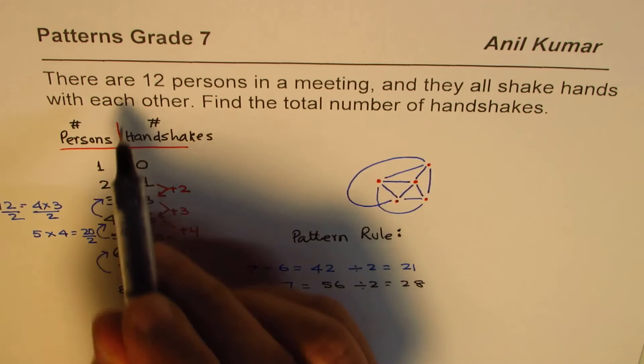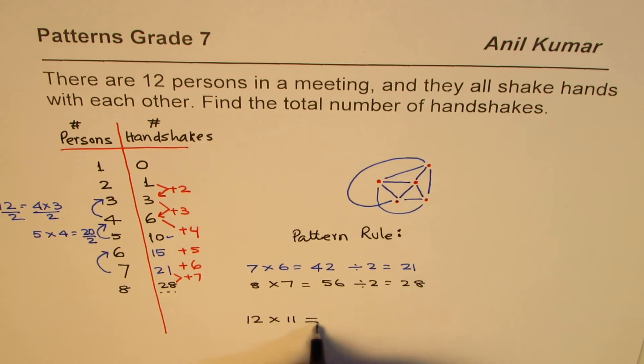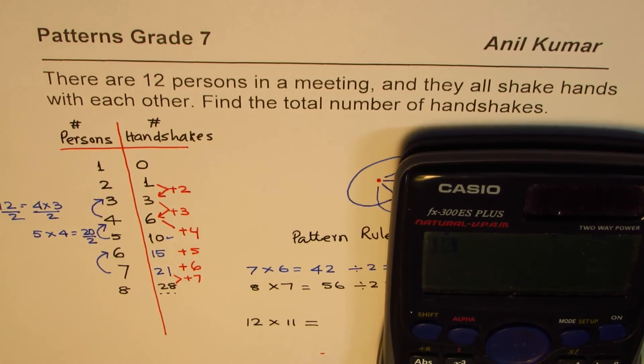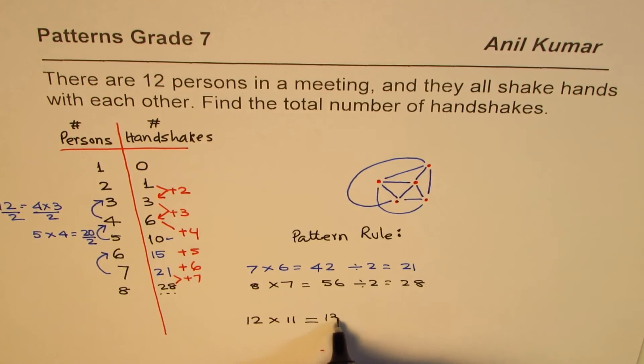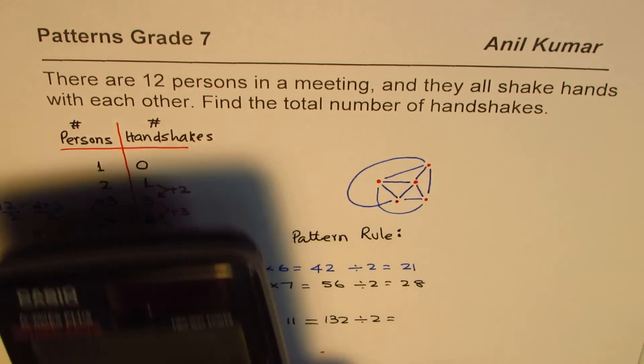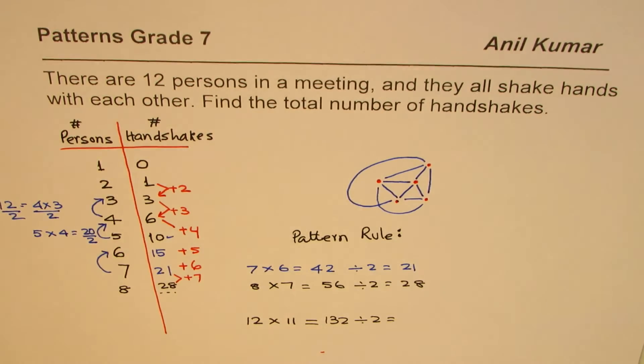Therefore, we can say for 12 persons, if we have 12 persons, then it should be 12 times 11, and then divide that number by 2. So let's do it. 12 times 11, and that is 132. So we get 132. And divide this by 2 - how much do you get? 132 divided by 2 is 66.